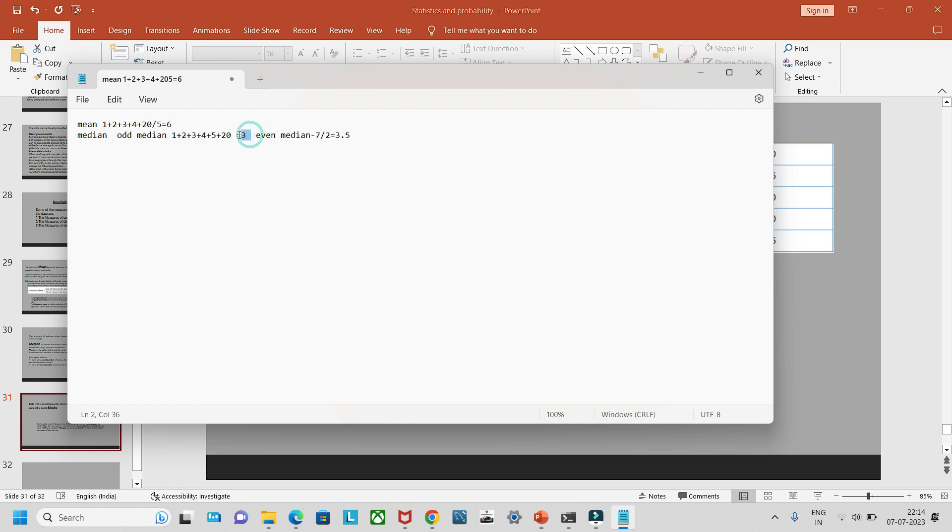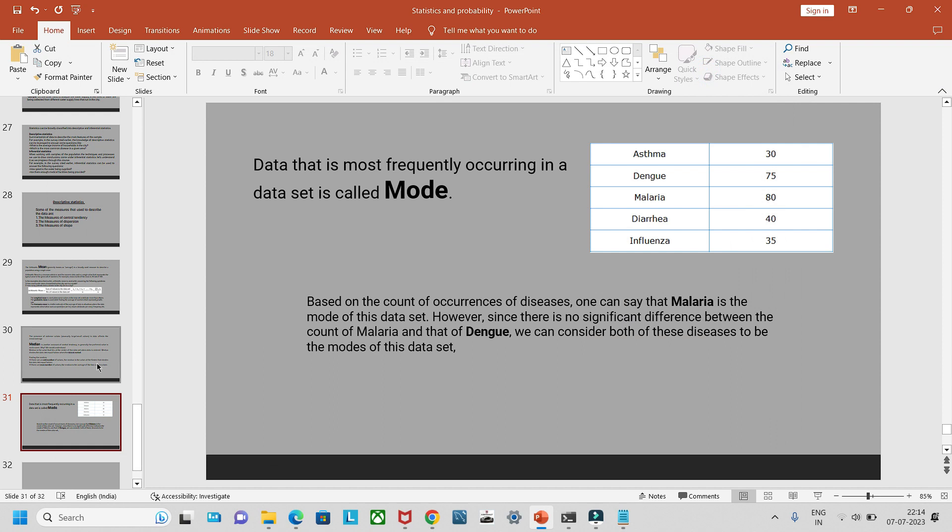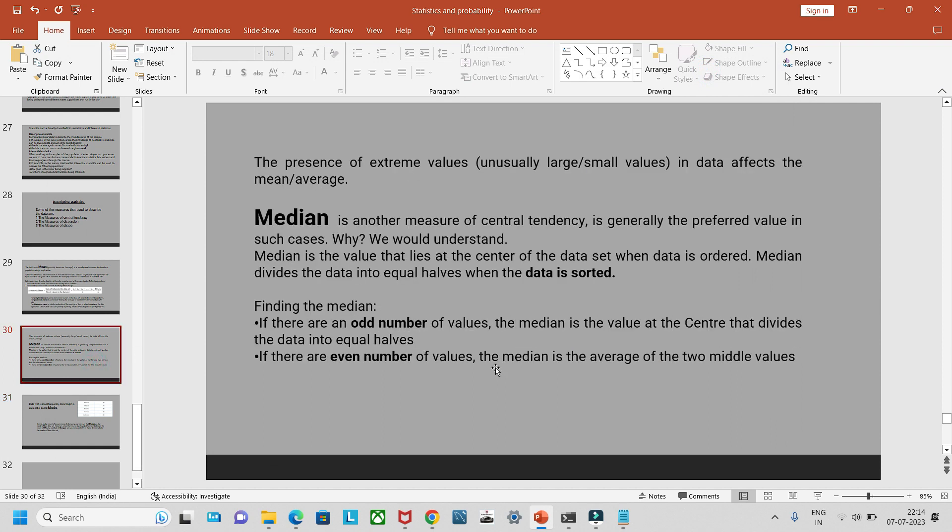Odd median is 3 and even median is 3.5. It won't be affected by the value of 20, but the mean is 6, which is largely affected by the value of 20. That's why we consider median in case of solving data sets.